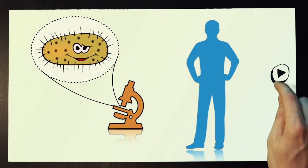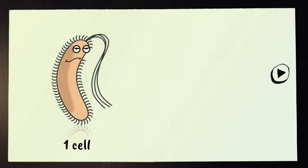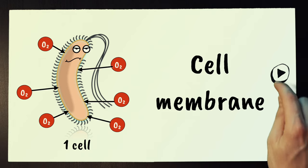Some organisms are big and some are small, but they're all made up of cells. Some tiny organisms like bacteria are made up of a single cell, and all the materials they need must be supplied via their cell membrane.